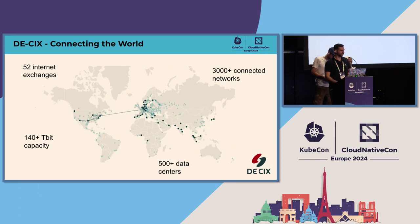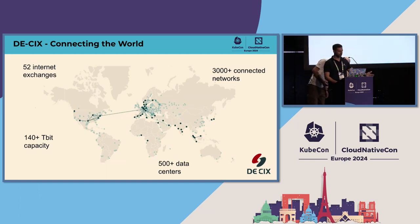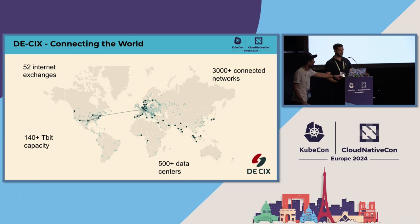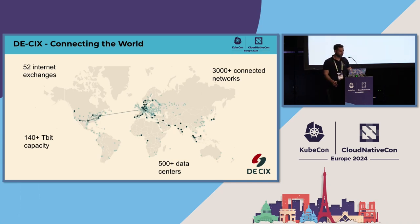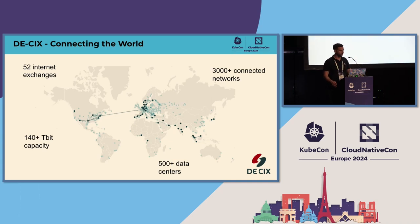We facilitate the interconnection of networks to improve the efficiency of internet services globally. We offer services like peering and cloud connects, playing a crucial role in the internet architecture for network providers, CDNs, and large enterprise networks so that all these networks can exchange traffic directly — reducing latency, increasing bandwidth and reliability. On this map you can see where we are present.